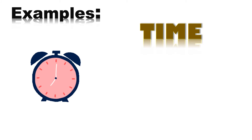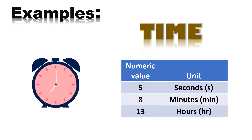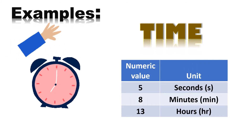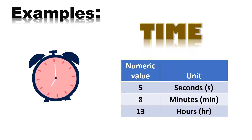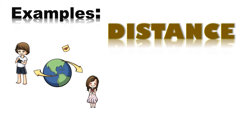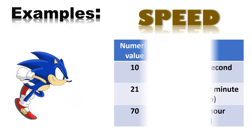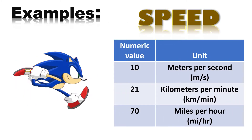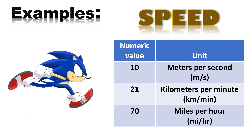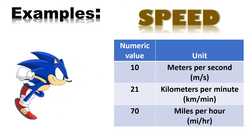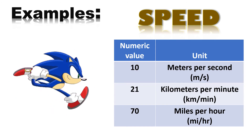To discuss more examples: for time, we have 5 seconds, 8 minutes, or 13 hours. For distance, merong 150 meters, or 86 kilometers, at pwede ding 97 miles. Sa speed naman, pwedeng 10 meters per second, 21 kilometers per minute, or 70 miles per hour.